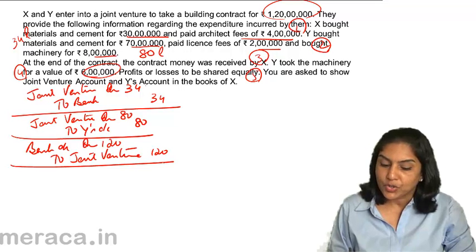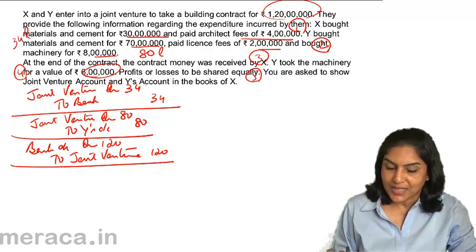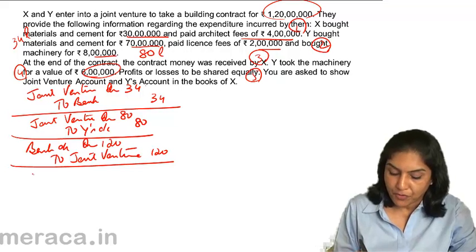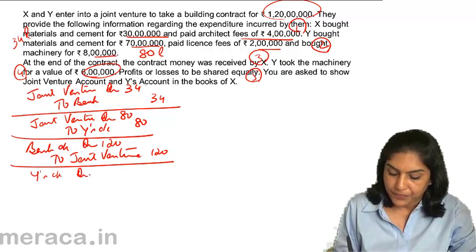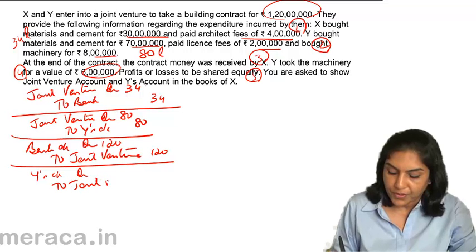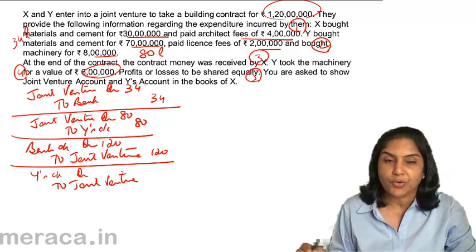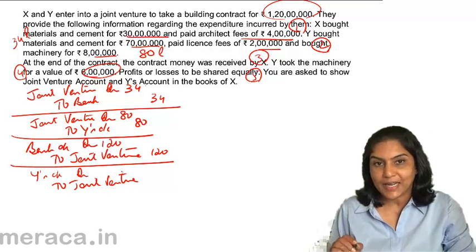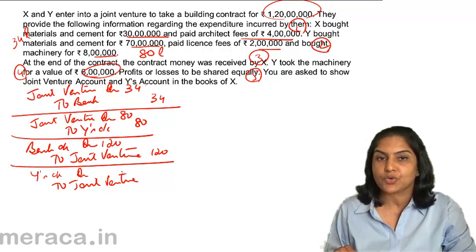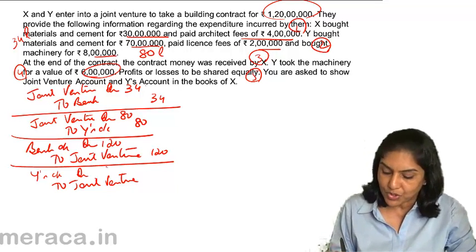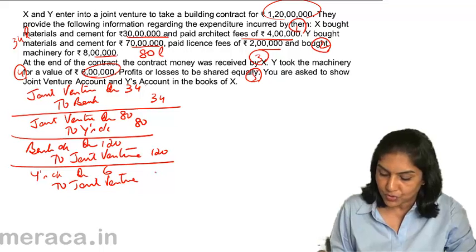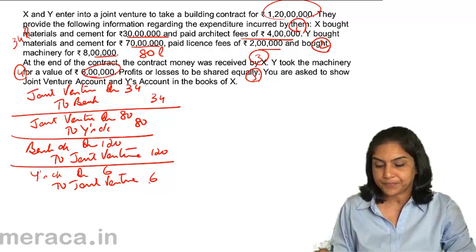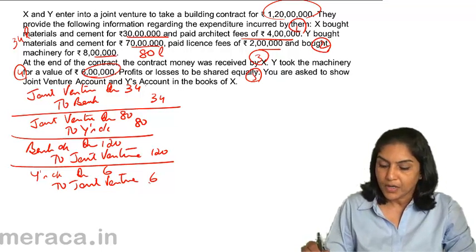Y took machinery for 6 lakhs. Therefore, Y's Account debit to Joint Venture. When machinery was bought, Joint Venture Account was debited; when it is taken over, it is credited with the value at which it is taken over, which is 6 lakhs.